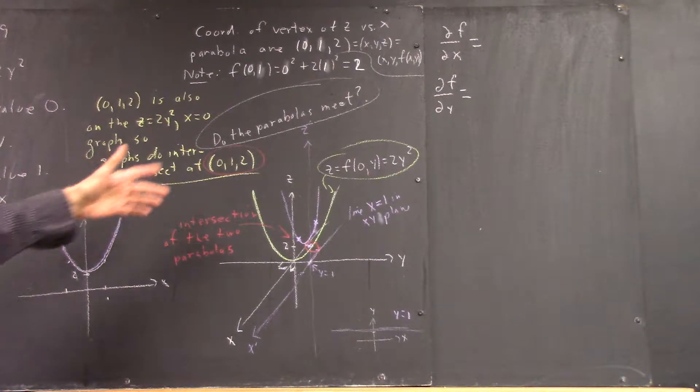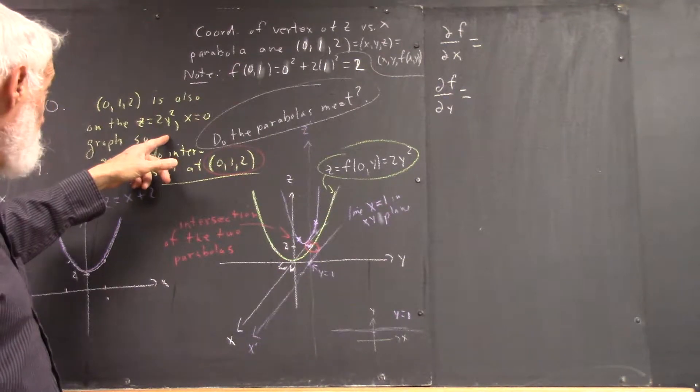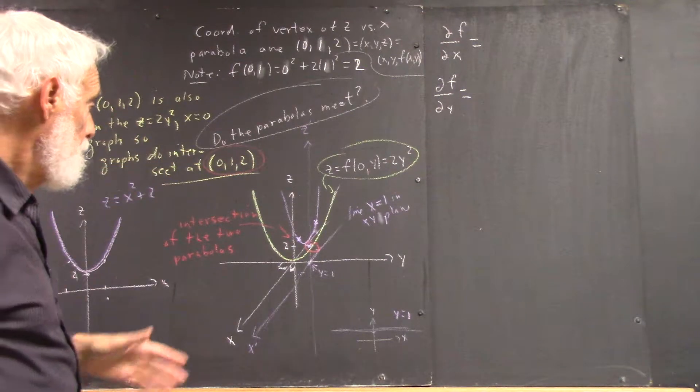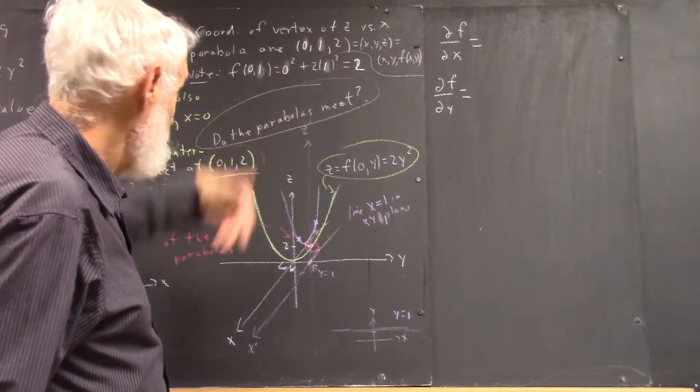The one we drew first, where we confined X to be 0, got the Z = 2Y² graph and plotted here in the YZ plane.